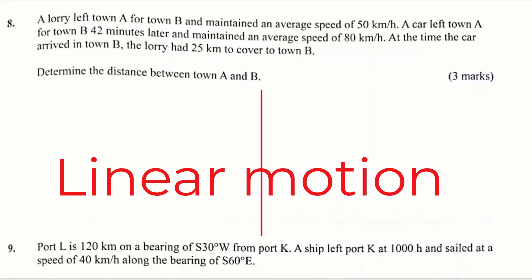Question number 8. A lorry left town A for town B and maintained an average speed of 50 km per hour. A car left town A for town B two minutes later and maintained an average speed of 80 km per hour. At the time the car arrived in town B, the lorry had 25 km still to cover to town B. Determine the distance between town A and B.